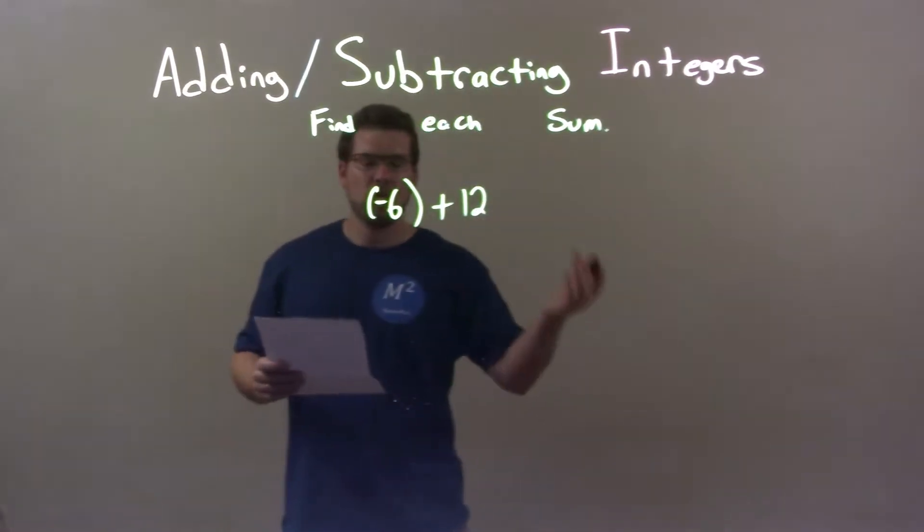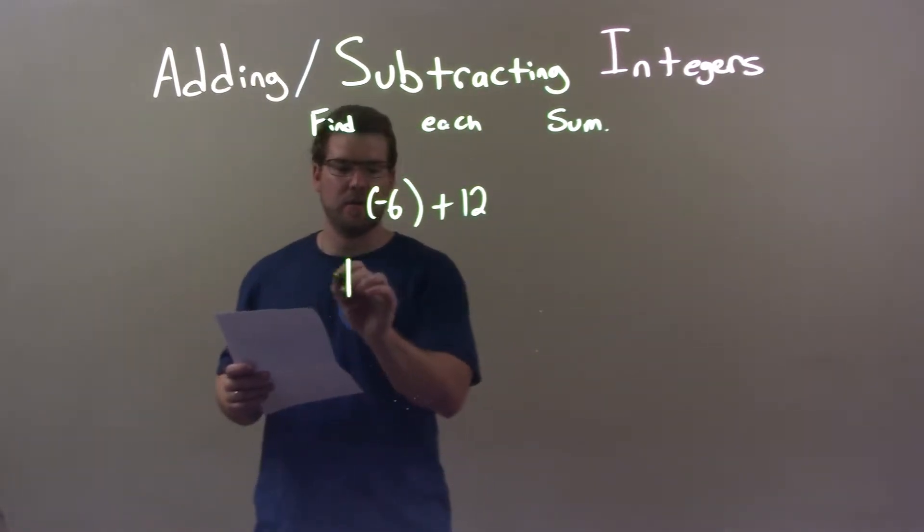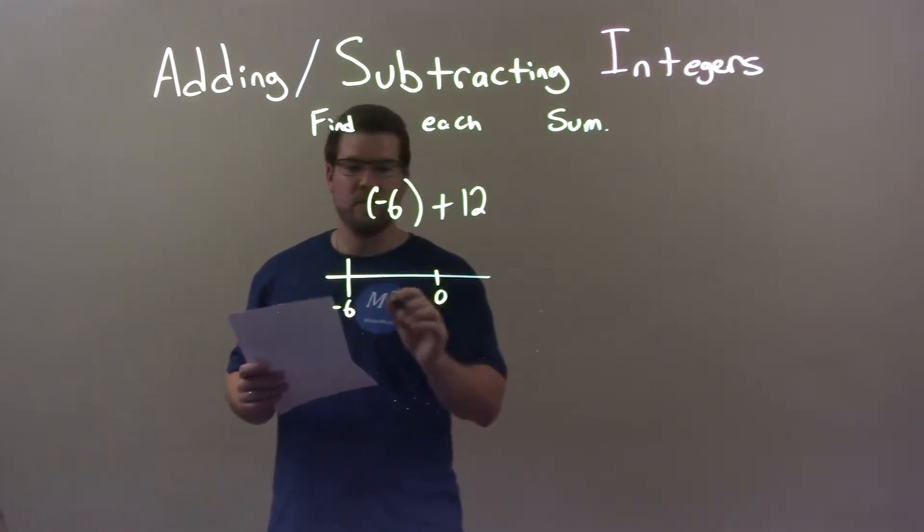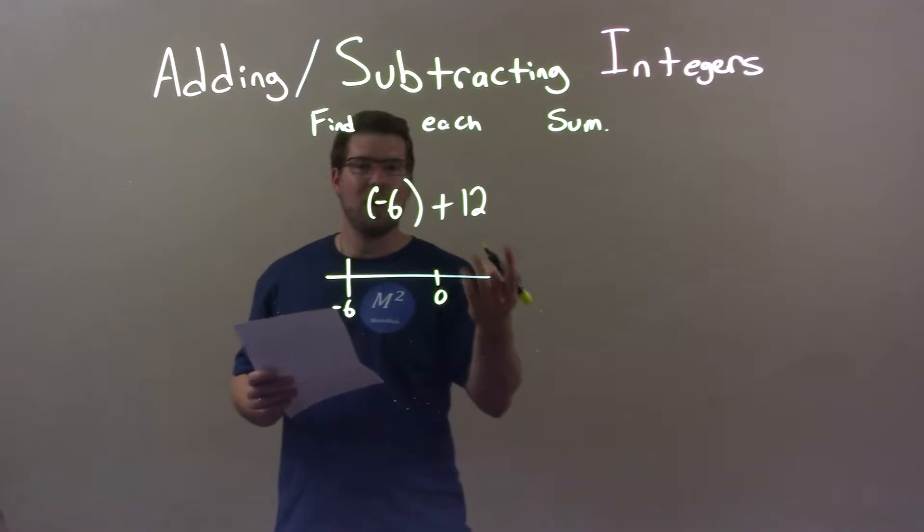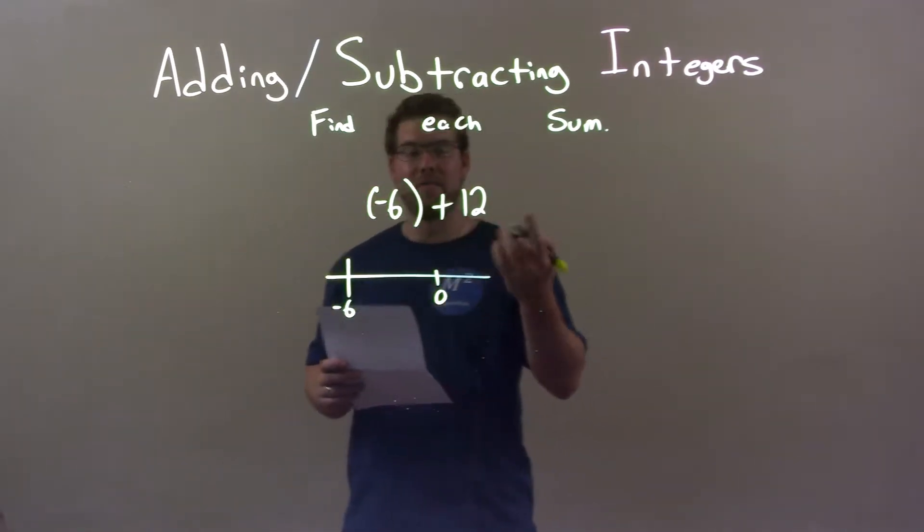Alright. Let's start with negative 6, negative 6 right here on the number line. Well, 6 units away is 0, right? We know half of 12 is 6.